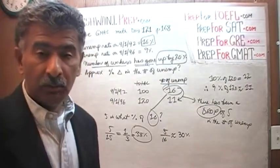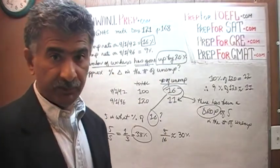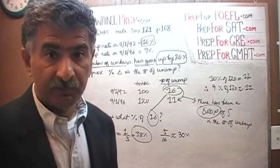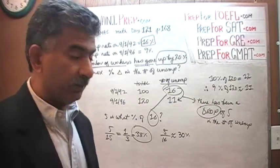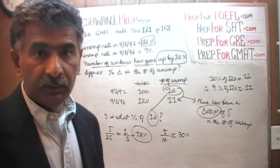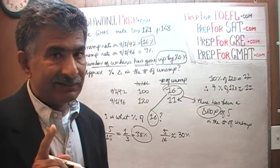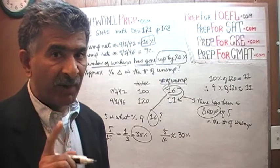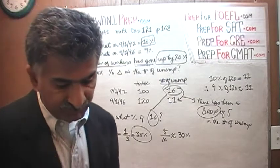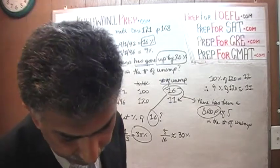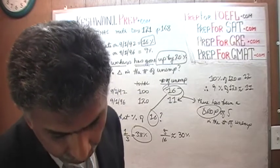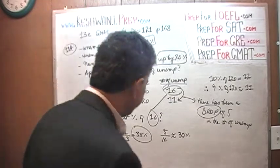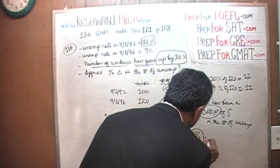The only answer choice that shows us a drop of around 30% is answer choice B. They say exactly 30%, so that's what it is — it's a drop of approximately 30%, because they use the word approximate in the problem: 'What is the approximate percentage change?' The answer is B.